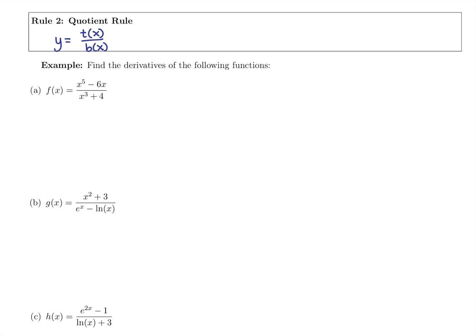This rule is a long one. Our derivative comes from taking first the derivative of the top, and order does matter because it has subtraction in it — 10 minus 8 is different than 8 minus 10. So you take the derivative of the top first, multiply it with the original bottom. Minus for quotient — product is plus, quotient is minus — minus the derivative of the bottom times the original top, all over the original bottom squared.